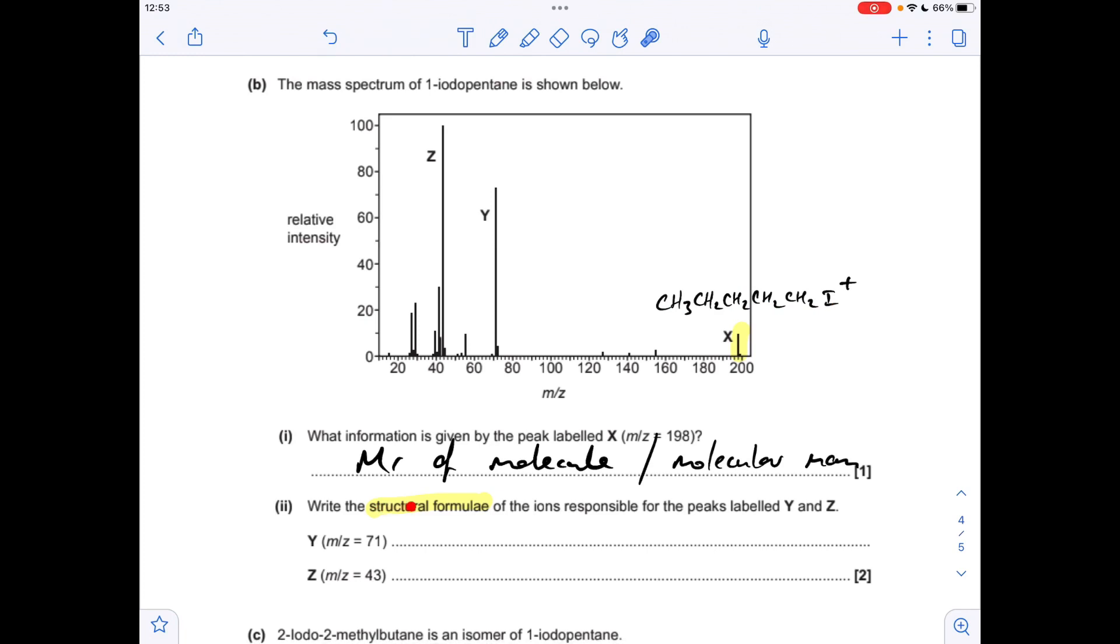So we need to come up with the structural formula for the ions responsible for the peaks labelled Y and Z. So if we start with Y, that's got an M over Z value of 71, so that's due to this ion here, so the fragmentation has happened there, so the iodine and the carbon, that bond's been broken by the electron gun in the mass spectrometer, and that would cause that peak there.